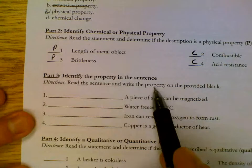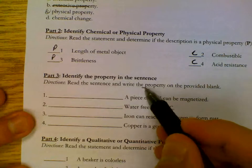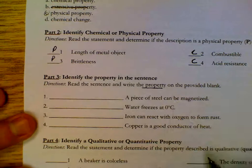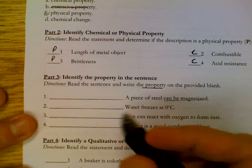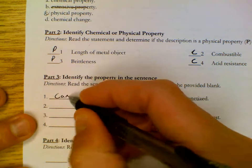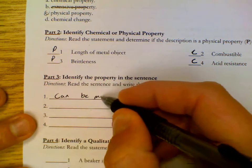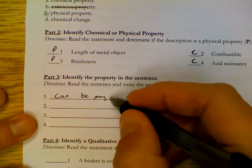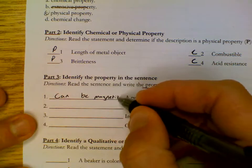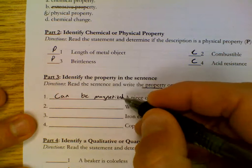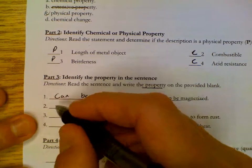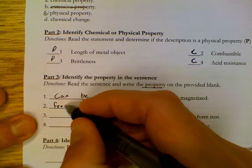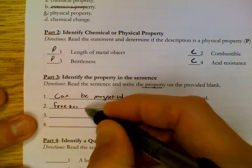Read the sentence and write the property. The property is a description of a substance. So a piece of metal can be magnetized, the property is can be magnetized. Water freezes at zero, so freezes at zero is the property.